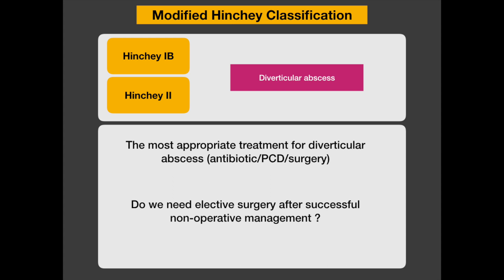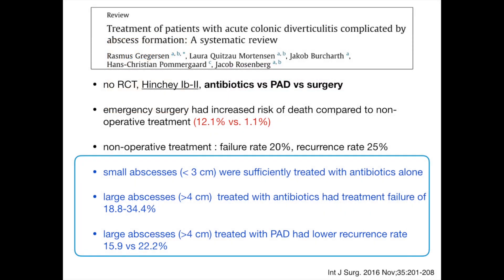Moving to patients with diverticular abscess: what should we do for acute management — antibiotics alone, drainage, or urgent colon resection? And after successful non-operative management, does the patient need elective colectomy? Unfortunately there is no consensus, as no strong data are currently available and most studies have selection bias. A systematic review of 42 observational studies focusing on Hinchey 1B or 2 treated by antibiotics alone, percutaneous drainage, or emergency surgery found that emergency surgery carried an increased risk of death compared to non-operative treatment: 12% versus 1%.